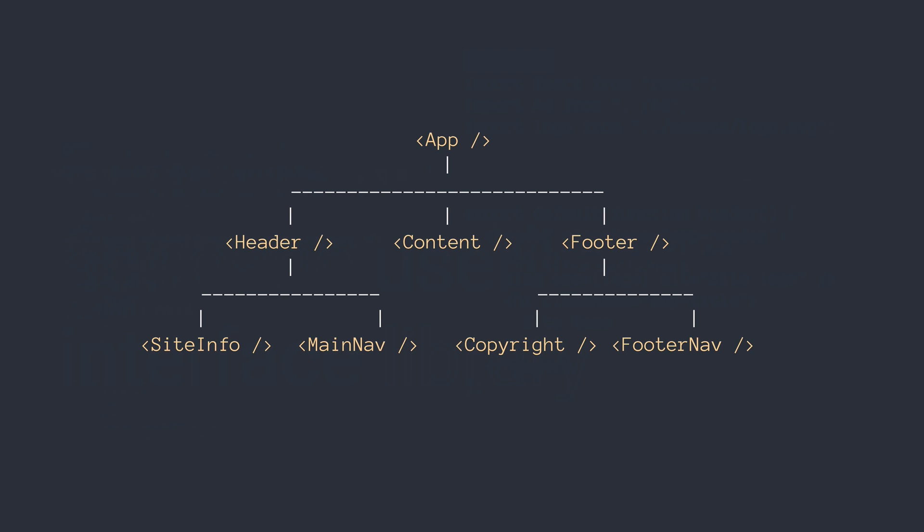Let's imagine that we had an application with an App component, and then we had header, content, and footer components that were all functions as well. And then within those — within header we had some more, within footer we had some more, and so on. You could see here the naming conventions and the organization of how this might be done. This is very common in a React app to have one main component, and then the rest of your app nested along the way.